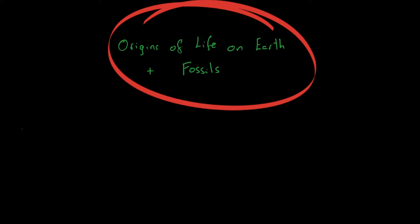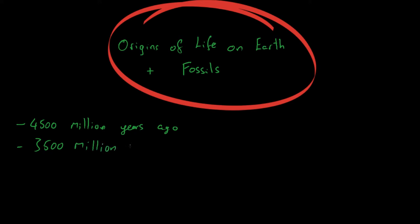The Earth was first formed at around about 4,500 million years ago — or 4.5 billion years. It's expected to take around about a billion years before any life was seen on Earth, so around about 3,500 million years ago is where you started to see life. This is when the Earth was first formed, and life arrived on Earth 3,500 million years ago.